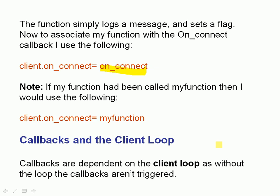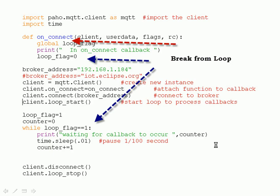The callbacks depend on the client loop. Without the client loop running, the callbacks aren't triggered. Here's an example script using the on_connect function. The on_connect function sets a flag, and we're going to use this flag to break out from a loop. There's a while loop that keeps running and saying 'waiting for the callback to occur.' As soon as the callback occurs, it sets the flag to zero, so this loop should exit, and we should drop to the end and simply disconnect. It's very important when you start a loop that you stop it at the end of your script.